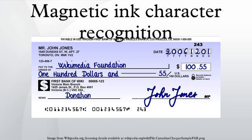MICR characters are printed on a document in either of the MICR fonts. The ink used in the printing is a magnetic ink or toner, usually containing iron oxide. The MICR text is passed before a MICR reader. The ink in the plane of the paper is first magnetized, then the characters are passed over a MICR read head, a device similar to the playback head of a tape recorder. As each character passes over the head, it produces a unique waveform that can be easily identified by the system. The use of MICR allows the characters to be read reliably even if they have been overprinted or obscured by other marks, such as cancellation stamps and signatures.